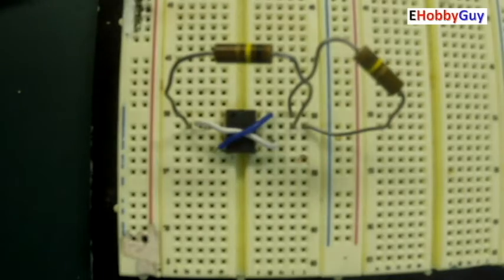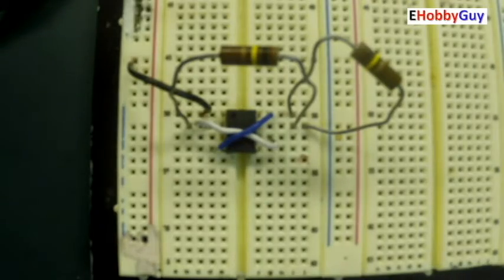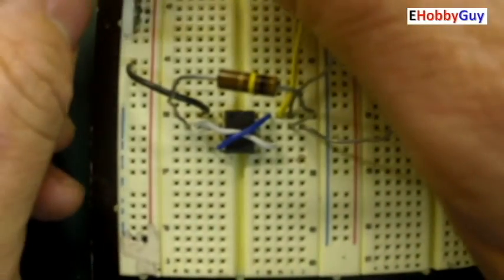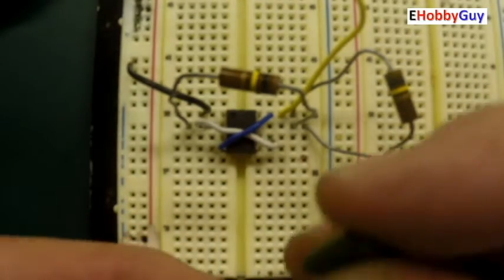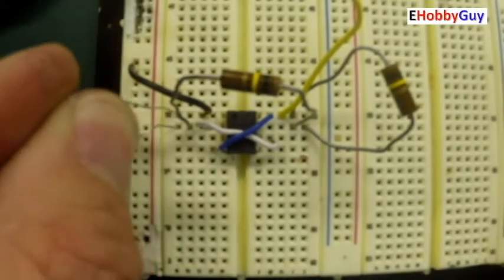Tie pin 1 to ground, tie pin 8 to VCC which is 5 volts, and put the 0.1 microfarad cap between pins 1 and pin 2.